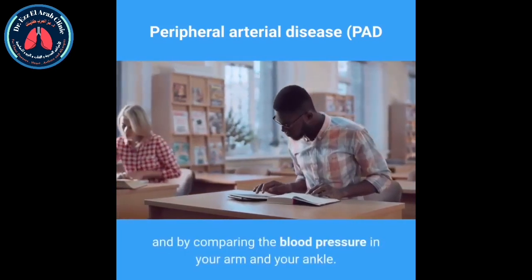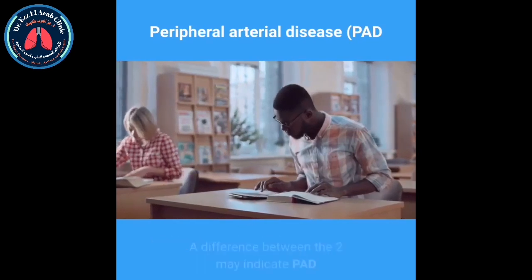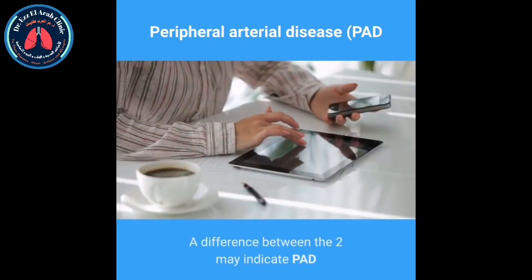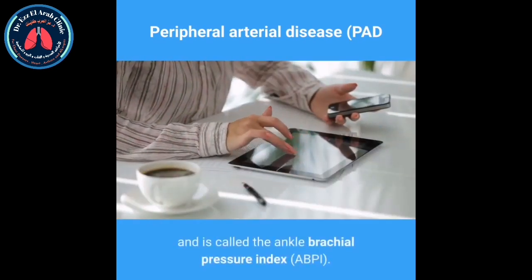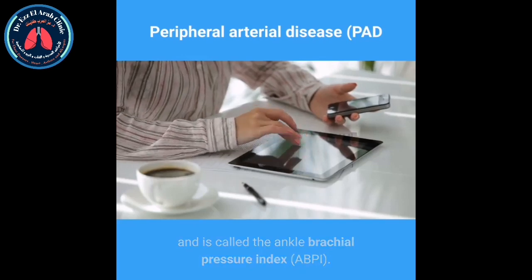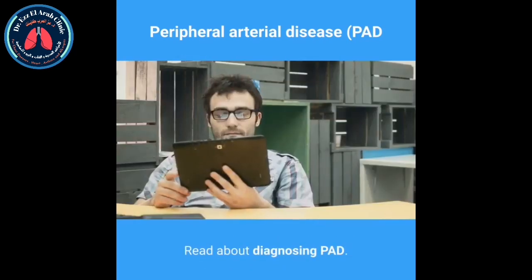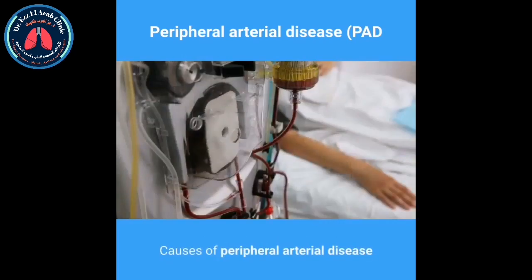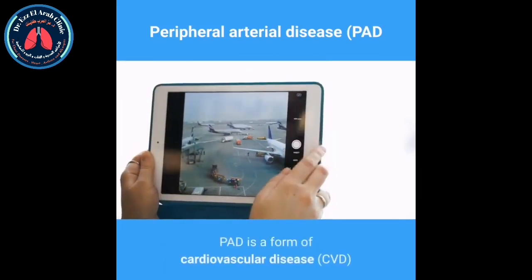PAD is usually diagnosed through a physical examination by a GP and by comparing the blood pressure in your arm and your ankle. A difference between the two may indicate PAD, and this measurement is called the ankle brachial pressure index, or ABPI.